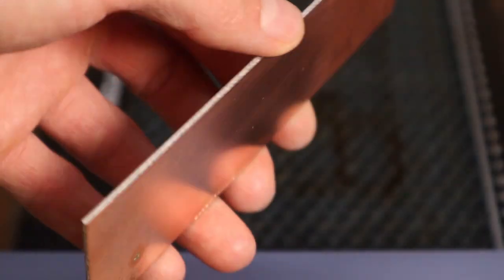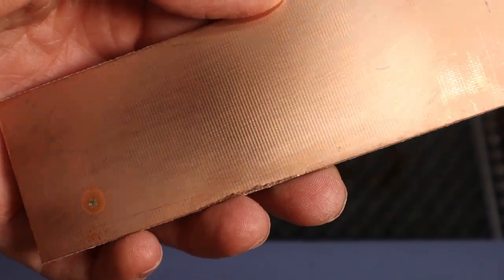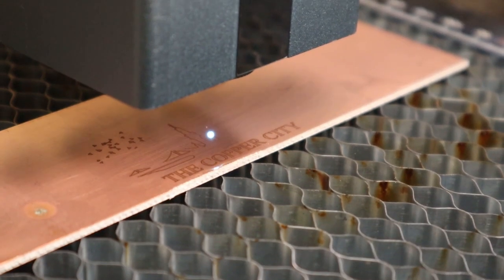Copper is similar to brass. Can't be engraved with blue light, but the infrared module has engraved it perfectly.